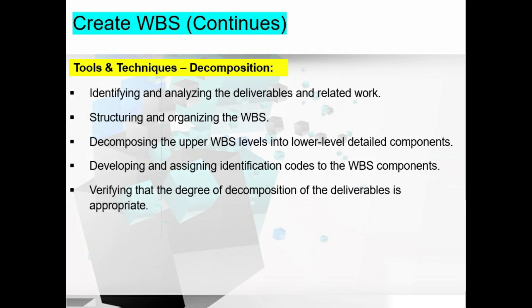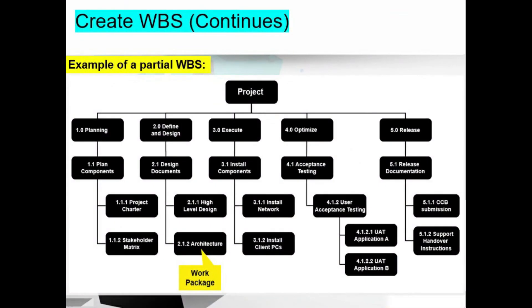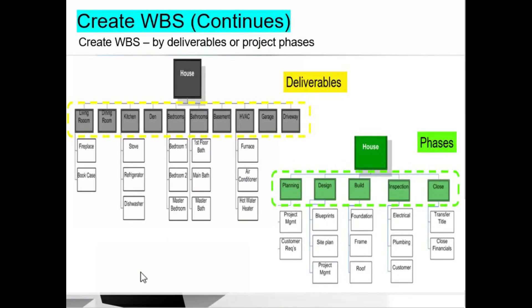Decomposition may not be possible for a deliverable that will be accomplished far into the future. The 100% rule states that the total work at the lowest level should roll up to the higher level so that nothing is left off and no extra work is performed — everything is covered from lower to upper levels. A partial WBS example shows a project divided into manageable sections: planning, defining, design, execute, optimize, and release — each further divided into activities until the work package level is reached. WBS can also be created by deliverables or project phases.